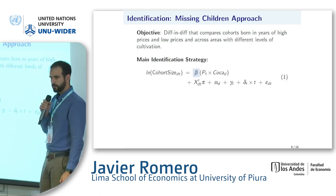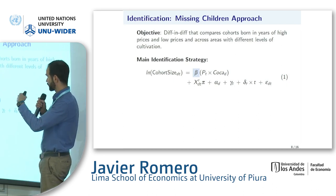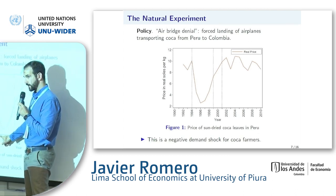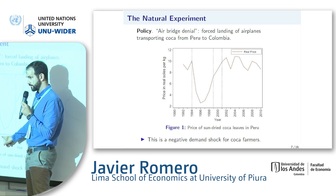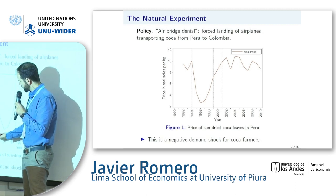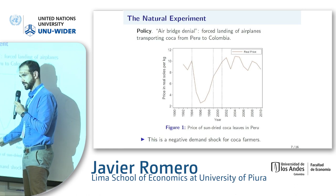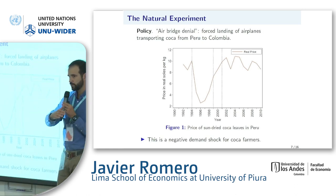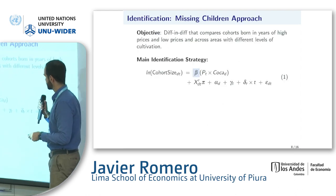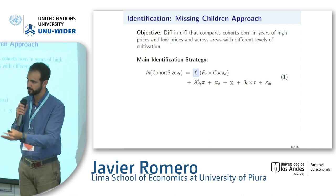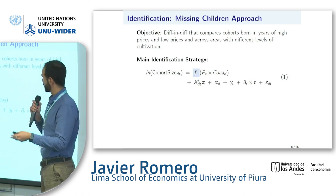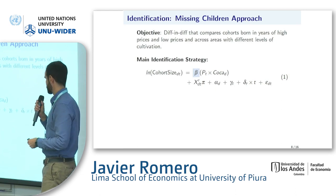For identifying the impacts of this price shock on mortality, we compare cohorts of children born in the very first year of the policy implementation — 1995, conceived the year before — to the cohorts immediately before them, the 1994 and 1993 cohorts. We do this comparison continuously across the map of Peru. Essentially, we're building a difference-in-differences strategy comparing cohorts of children over time and across space, depending on how much coca was being grown in each district at baseline, before the implementation of the policy.